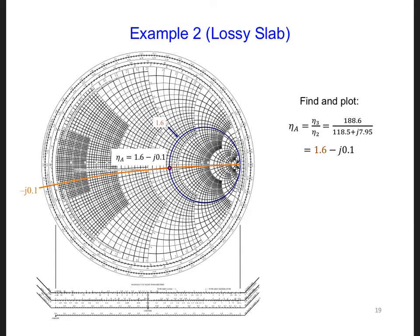First, we need to normalize eta 3 using eta 2, and we get 1.6 minus j 0.1. So here is the circle for a real part of 1.6, and negative 0.1 will be the lower part of the Smith chart, so here's the 0.1 arc, and here is our impedance at interface A.